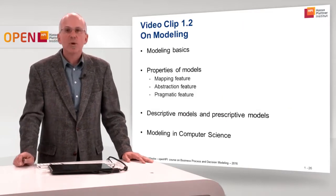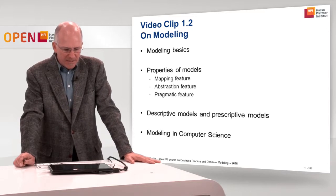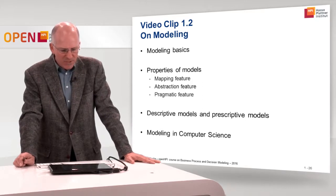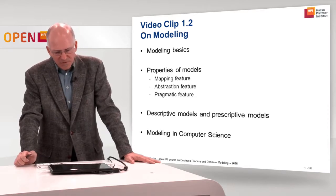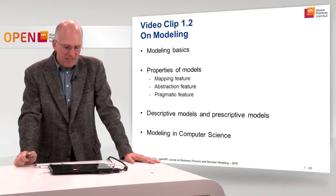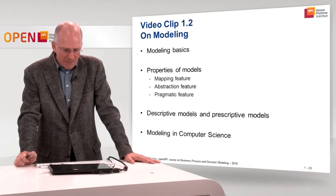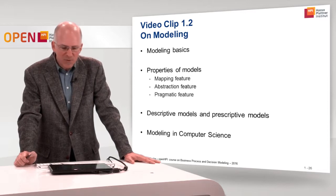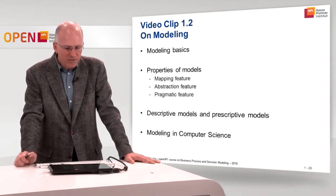That concludes video clip 1.2 on modeling. We discussed modeling as a human activity and the modeling basics, the Stachowiak properties of models — the mapping feature, the abstraction feature, and the pragmatic feature. We looked at descriptive and prescriptive models and discussed that you cannot tell from the model alone whether it is descriptive or prescriptive. Sometimes we start with a prescriptive model and it later turns descriptive, as in the kitchen example. Finally, we discussed different types of models in computer science.